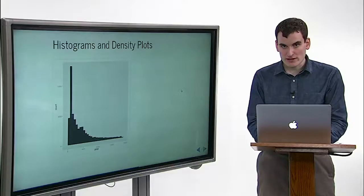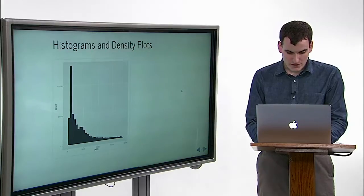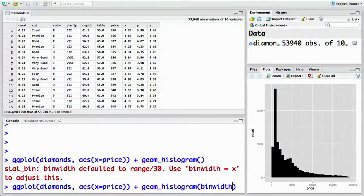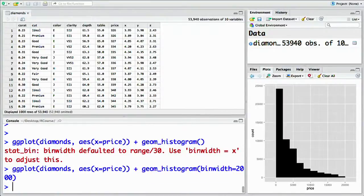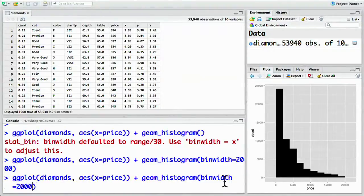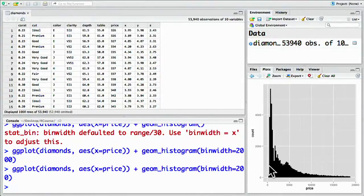You can change the width of each bin as an option to the geom_histogram layer. You can make them wider with binwidth—you set it to the width you want, let's say 2000, which is wider. Bins get wider. Or you can change it to thinner, binwidth equals 200, and the bins get thinner.